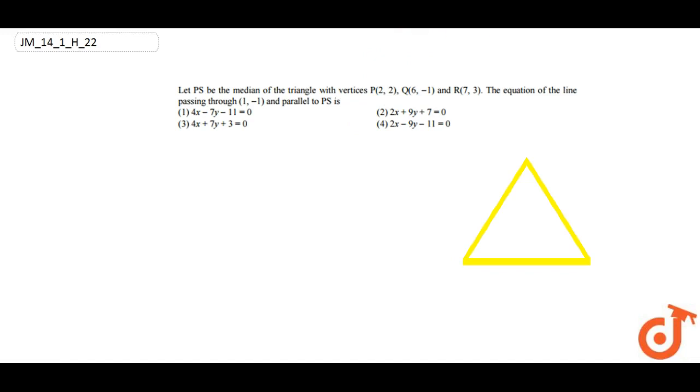Now let's draw line PS. We have point P(2,2), Q(6,1), and R(7,3). We know that a median bisects the opposite side into two equal halves, so S is the midpoint of QR. The coordinates are (6+7)/2 and (3-1)/2.